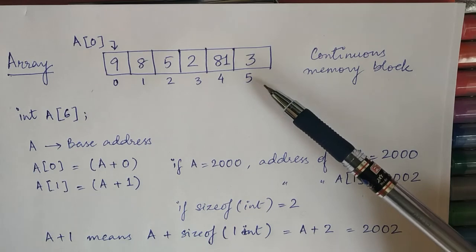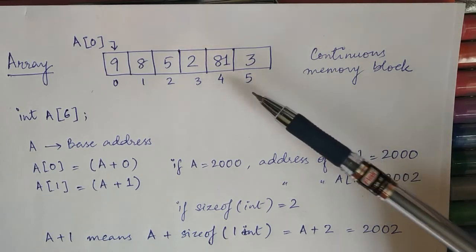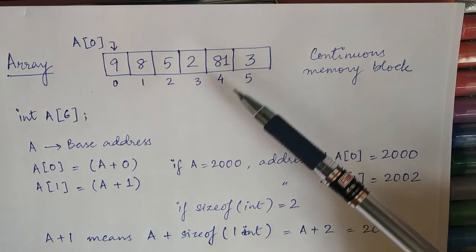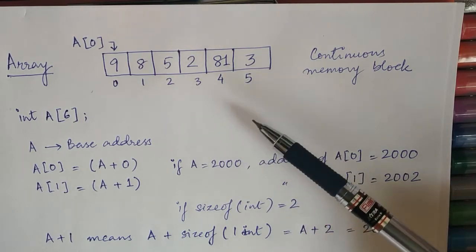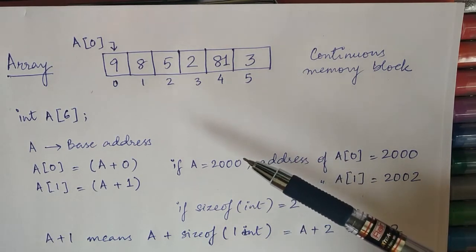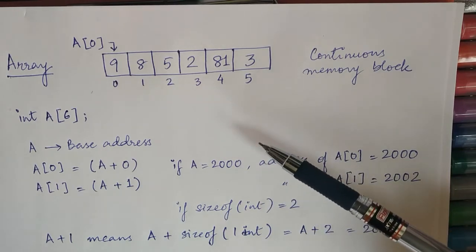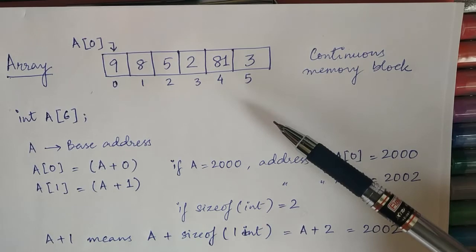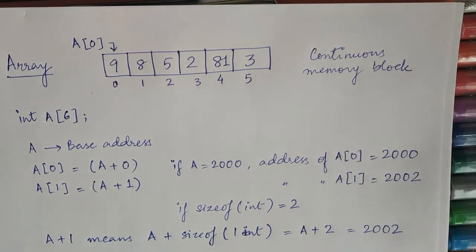So since it is static allocation of memory, you have to define the size at the beginning. This is one major advantage of linked list where you do not define the size of the list. This is a list of elements, a linear list of elements.